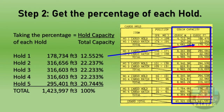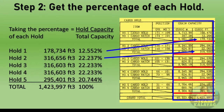Step 2: Get the percentage of each hold. To find the percentage of each hold, divide the hold capacity by the total capacity. In hold number 1, the volume is 178,734 cubic feet. Dividing hold number 1's volume of 178,734 cubic feet by the total volume gives the percentage. In hold number 2, using the same procedure, the hold capacity is 316,656 cubic feet divided by 1,424,997, giving 22.237 percent.